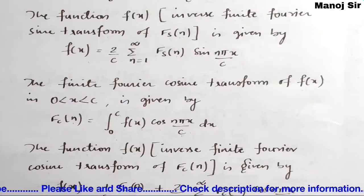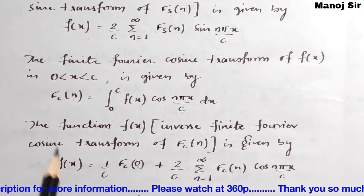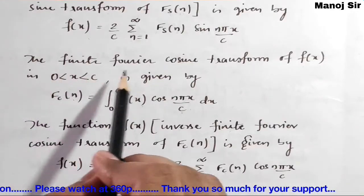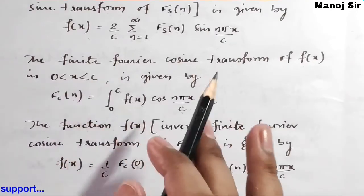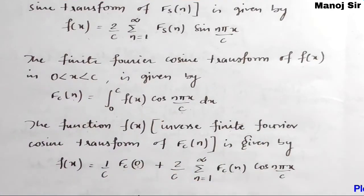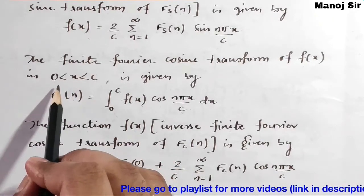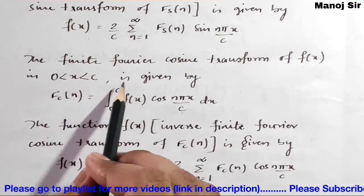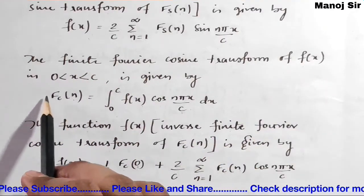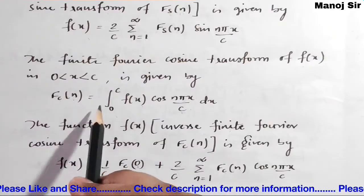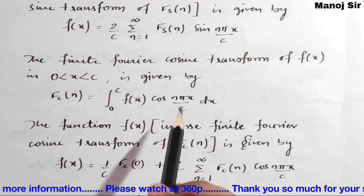Now we will see the finite Fourier cosine transform. For any function f(x) in the interval zero to c, where c is any constant, the finite Fourier cosine transform is given by: Fc(n) equals integration from zero to c of f(x) cos(nπx/c) dx.